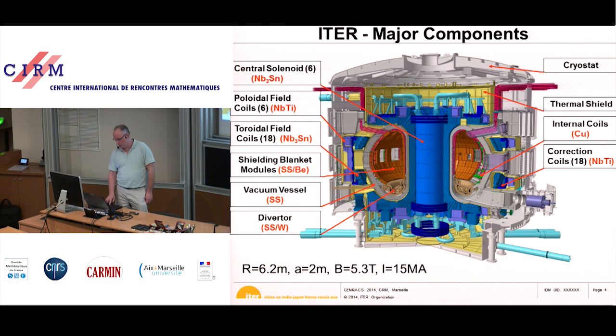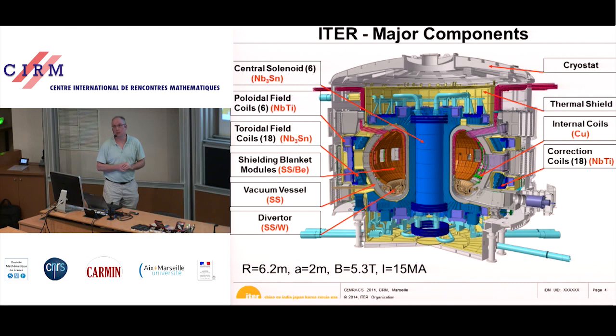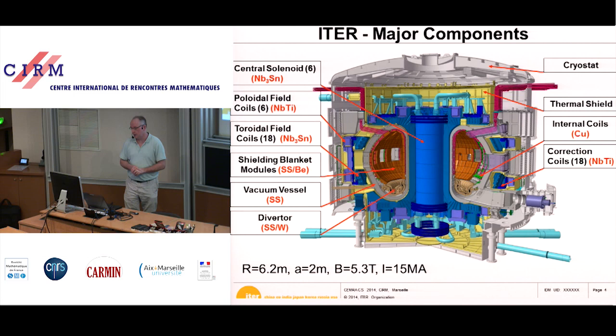There's the diverter, which is an important part and will be made of tungsten. In the bottom is where the plasma touches the wall. Tungsten only melts at 2,700 degrees — that's why it was chosen — and it doesn't contaminate the plasma as much.